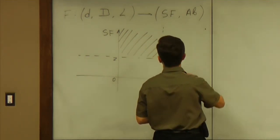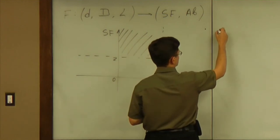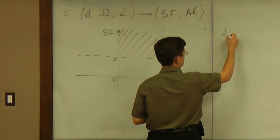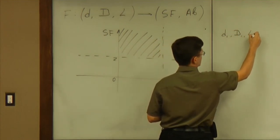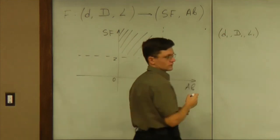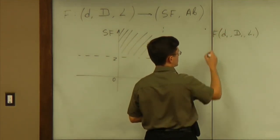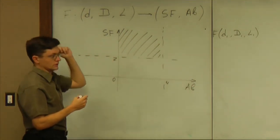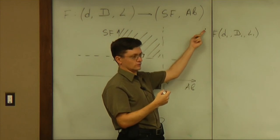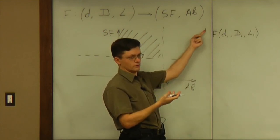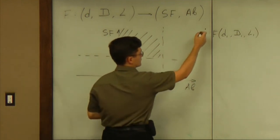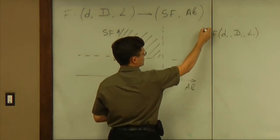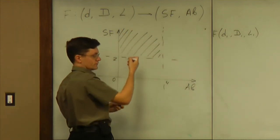And then, so you choose numbers say d1, capital D1 and L1. This is your first try. And the value F of the triple is somewhere in that plane. And then how to improve that result. How to choose three numbers better. So that is a question that calculus can help resolving. And the idea is that you basically have to move this point closer to this region and hopefully inside the region.